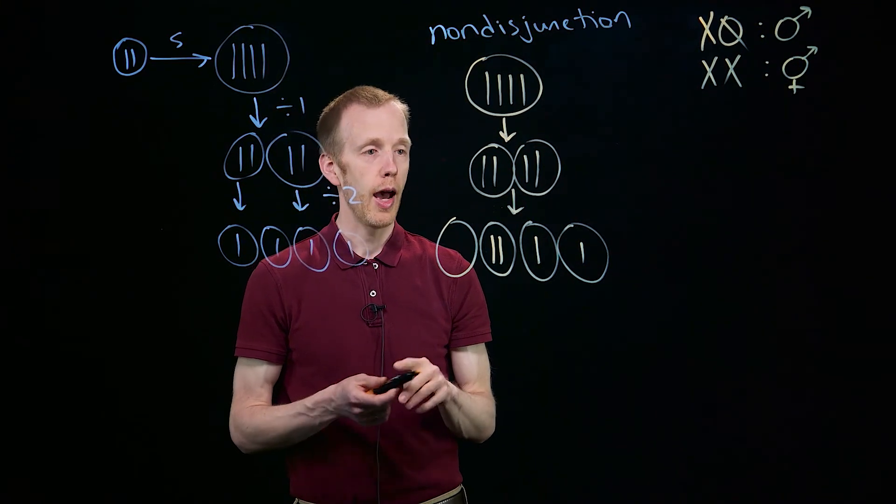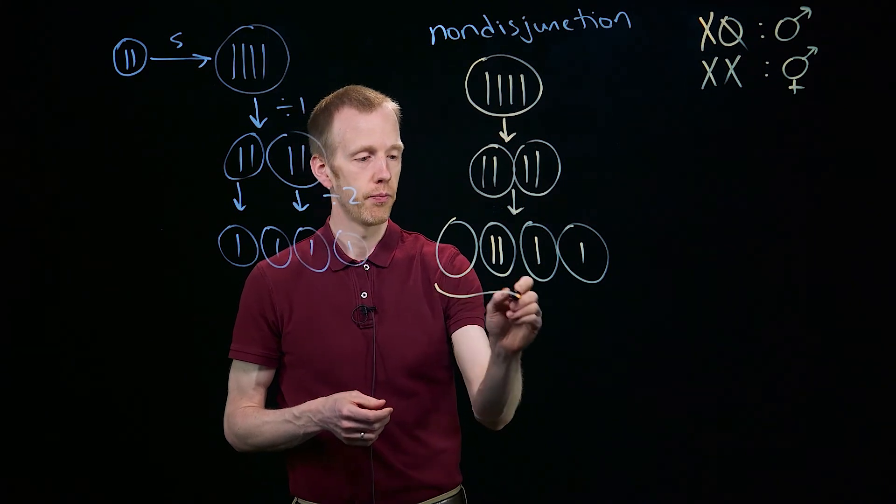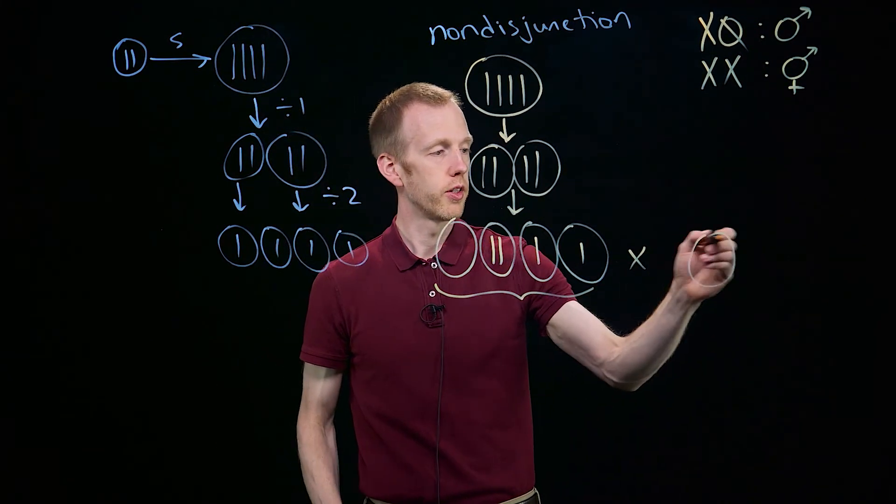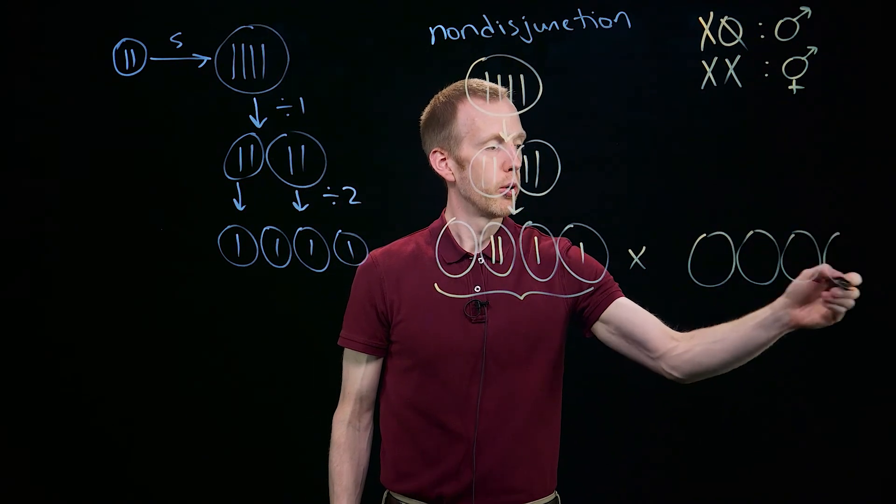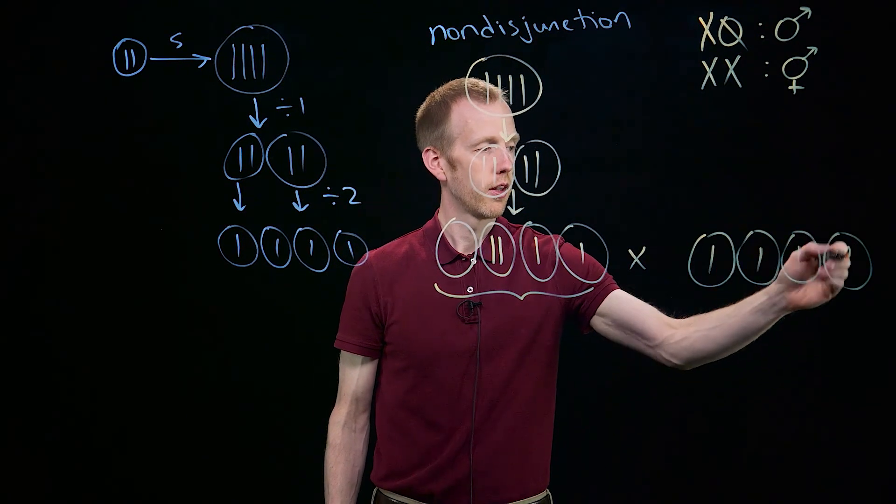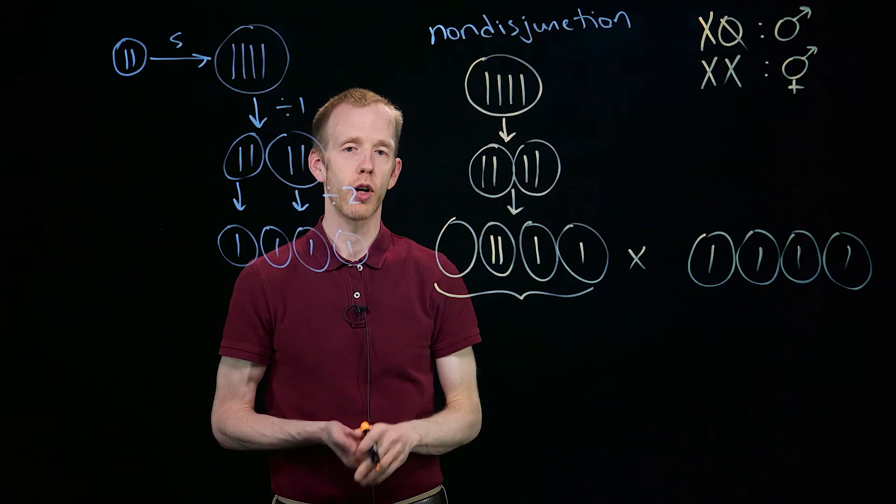So you can imagine that what could happen is this individual might be mated with an individual that's undergone meiosis and produced a set of normal gametes, each of which has a single copy of each chromosome.